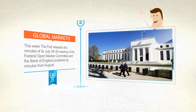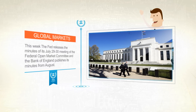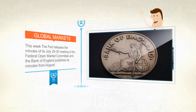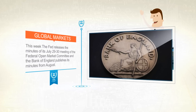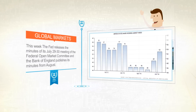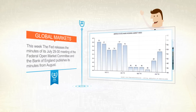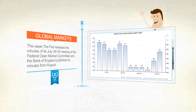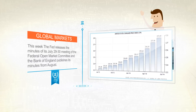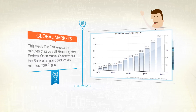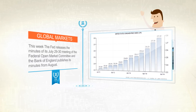Also this week, the Fed releases the minutes of its July 29th meeting, and the Bank of England publishes its minutes from August. US sales of previously owned homes held near an eight-month high in July, a report in the coming week may show. The US consumer price index rose at the slowest pace in five months.